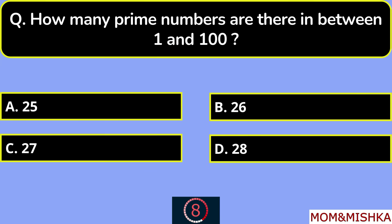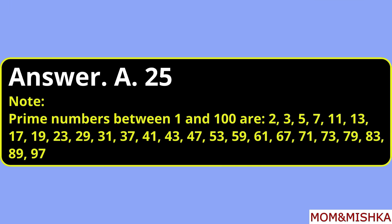How many prime numbers are there between 1 and 100? There are 25 prime numbers. Option A. A list is provided.